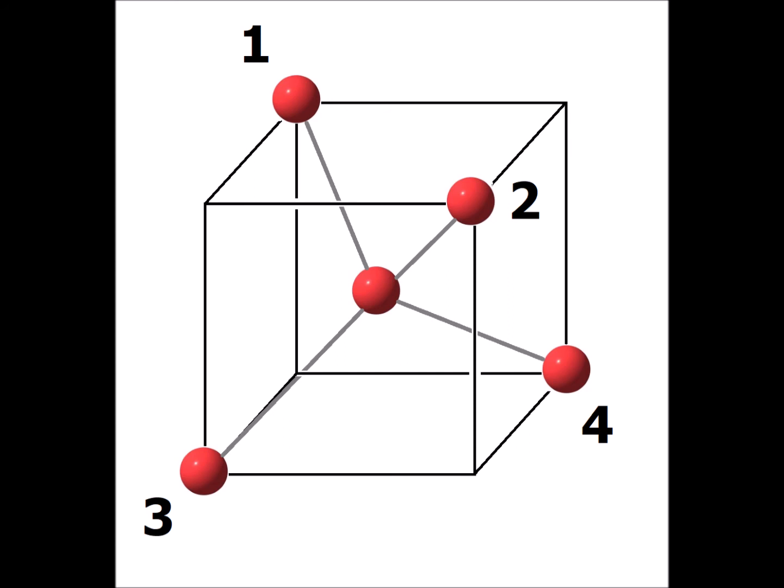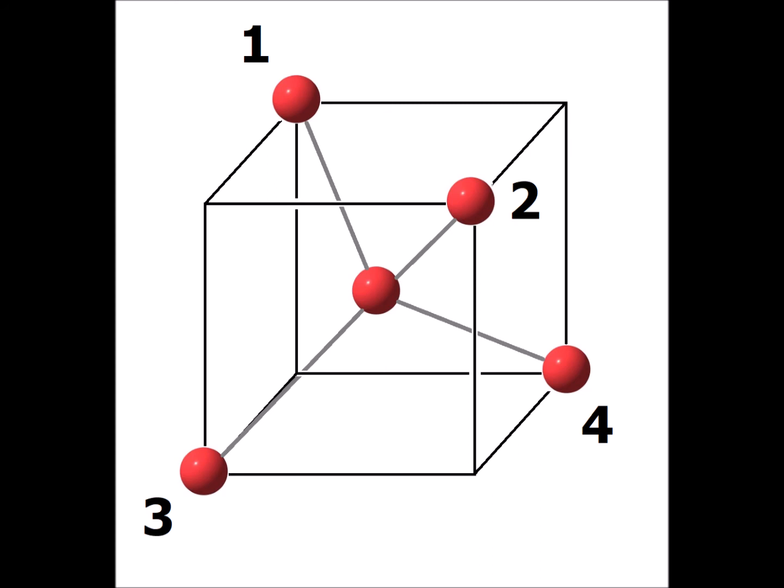Therefore, we have to take our six possible configurations of the water molecule in the center and divide that by four to get the proper number of configurations. And six divided by four is simply equal to three over two. Therefore, by Pauling's first method, the number of configurations for our entire crystal, a mole worth, should be three over two to the nth power.